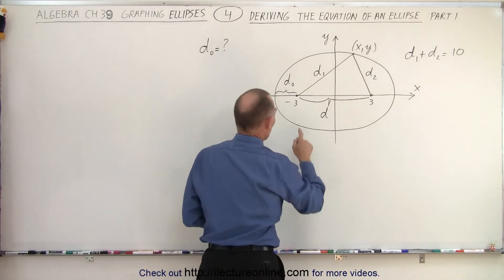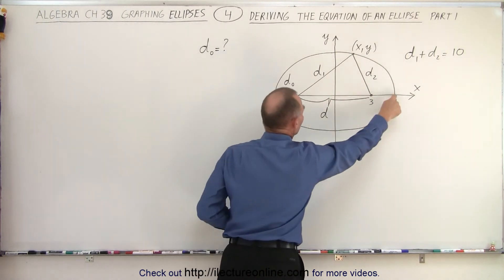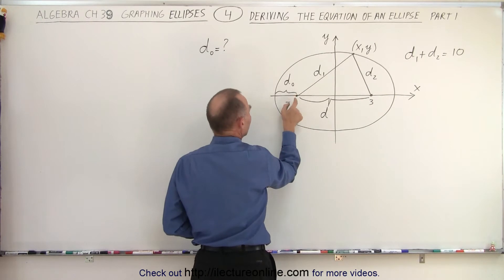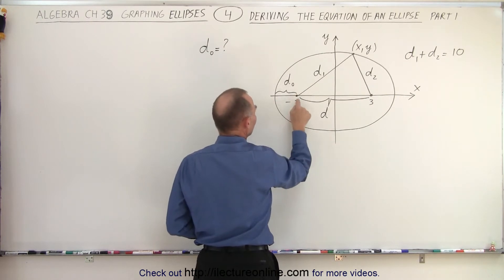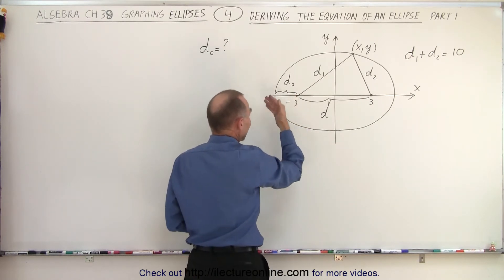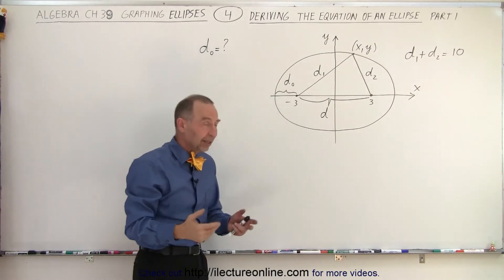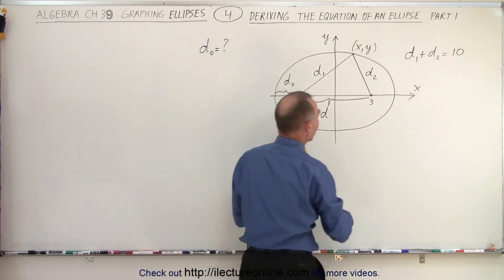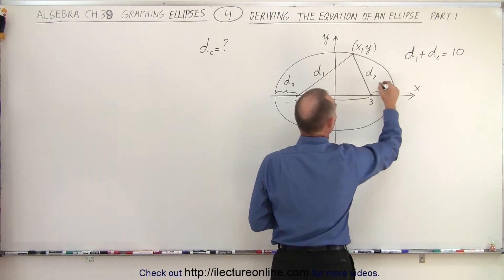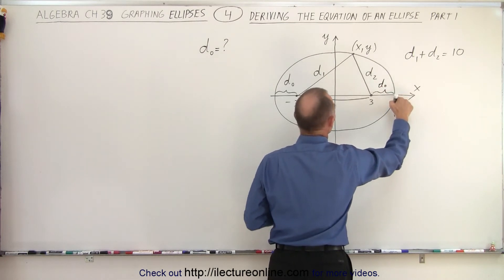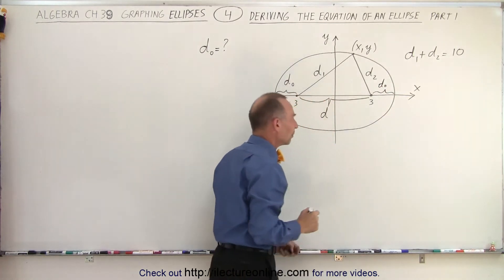The question may be, where is the end of the ellipse right here? That would be the distance from there to there. So if this is negative 3, then this is maybe negative 4, negative 5, negative 6, something like that. And we would like to know the distance on the other side. That would also be d sub 0, and we want to know where those two points are on the end of the ellipse.